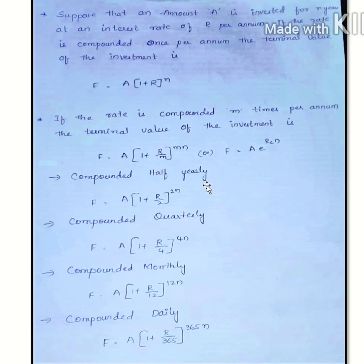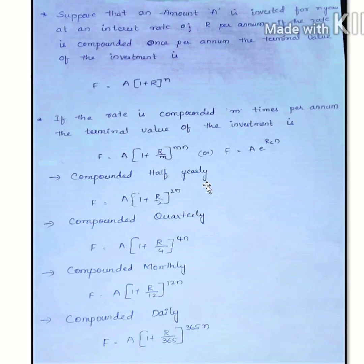The exponential method uses F equals A into e to the power RC times N. This is the continuous compounding formula. Especially in international and derivatives markets, where there is fluctuation every second and every minute across the world 24 hours a day, we use continuous compounding. RC indicates the continuous rate of interest, whereas RM is used for number of times compounding.